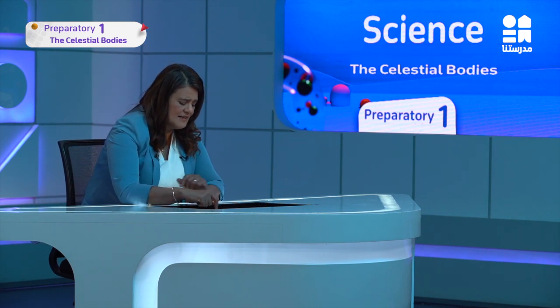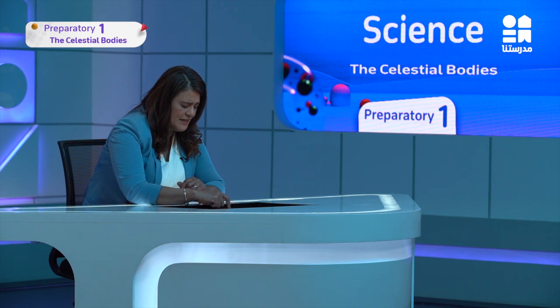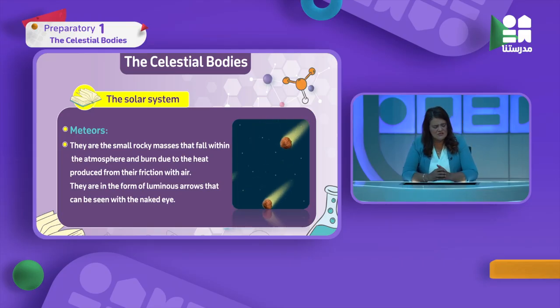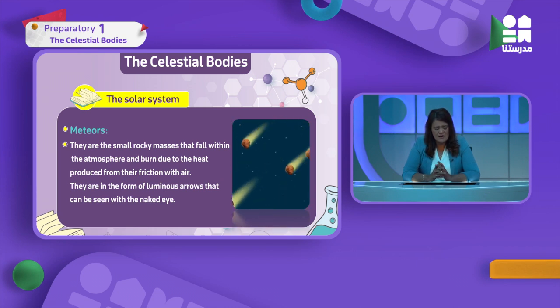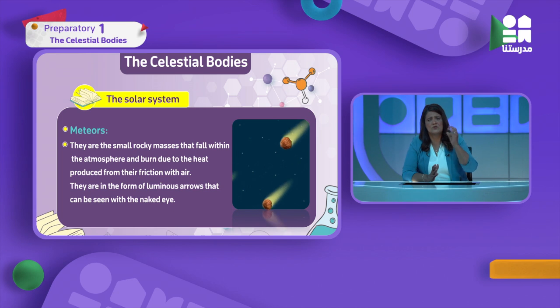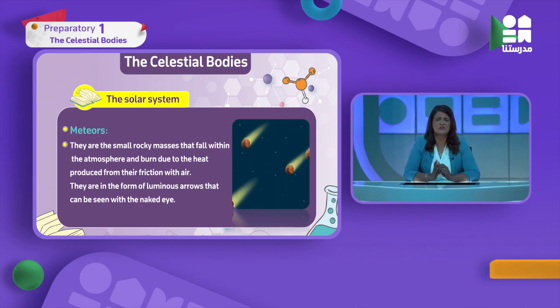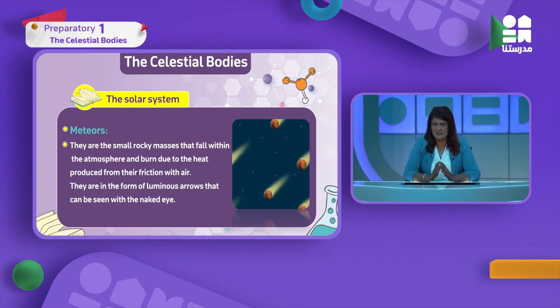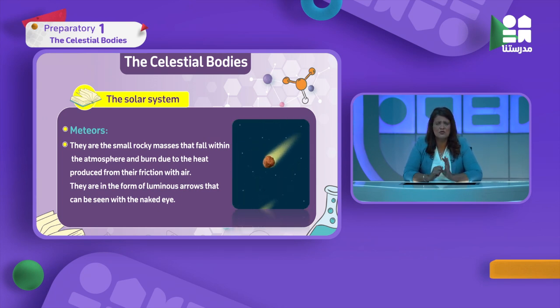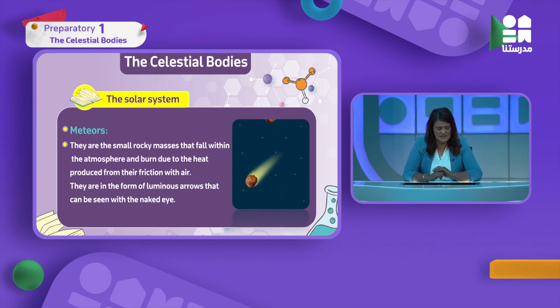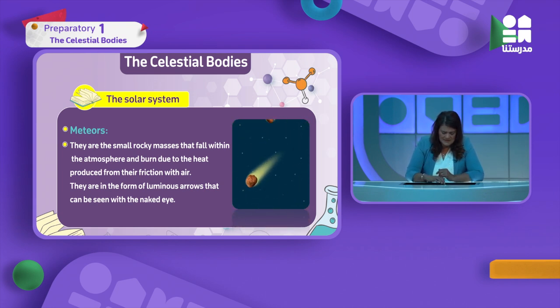Now let's review meteors. They are small rocky masses that fall within the atmosphere. On their way to Earth, friction occurs between them and air particles and molecules, causing intense burning. This appears to us as luminous arrows - a very bright light that can be seen by the naked eye. Meteors are small compared to planets.